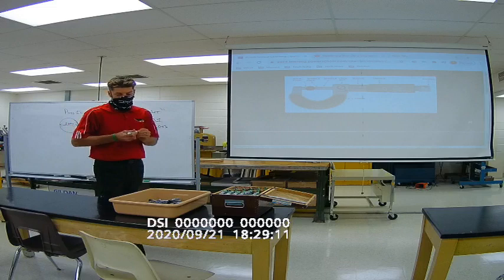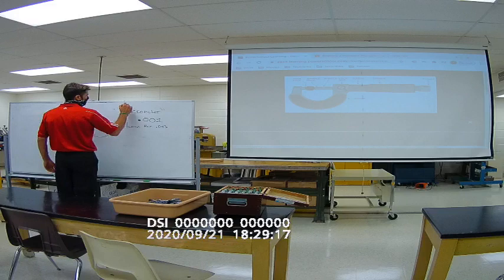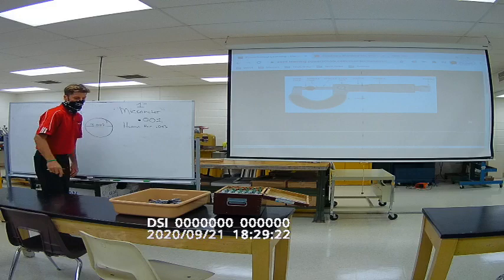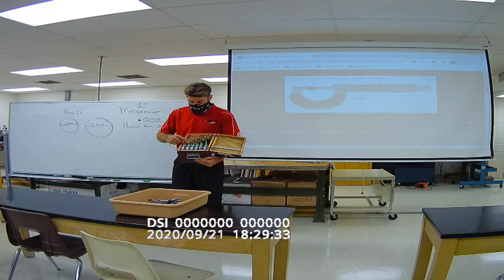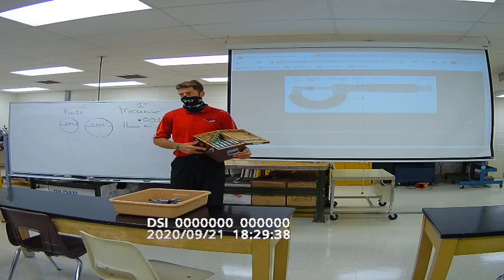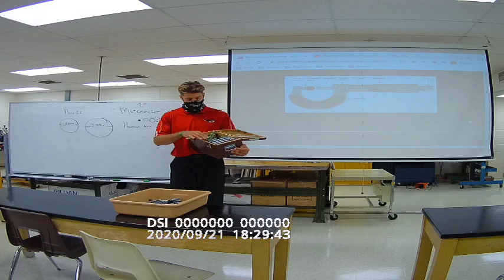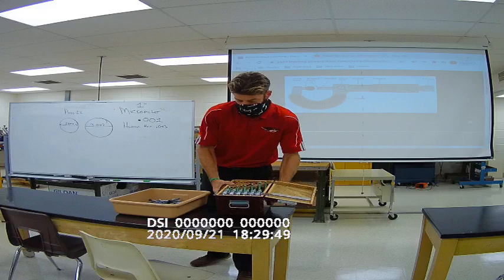Now, all our micrometers only move 1 inch. They only move 1 inch. And some of you have a 0 to 1, 2 to 3, 4 to 5 micrometer. This is an entire set here: 0 to 1, 1 to 2, 2 to 3, 3 to 4, 4 to 5, and 5 to 6. A good set like this in Starrett would be over 1,000 bucks. This is just a knockoff, it's about 150 bucks. So, that's all our sizes.